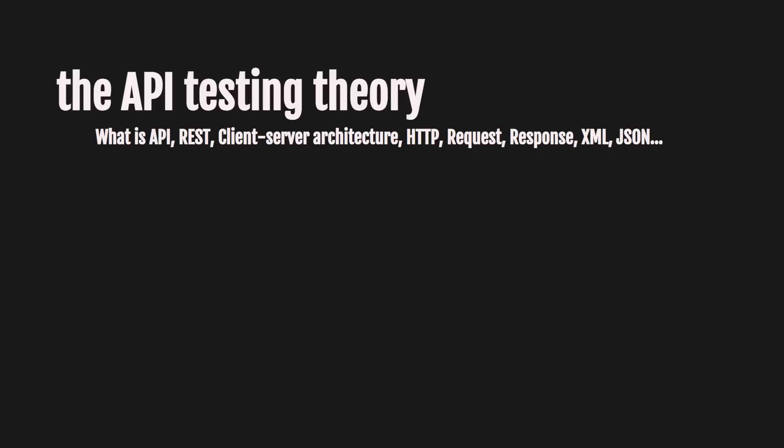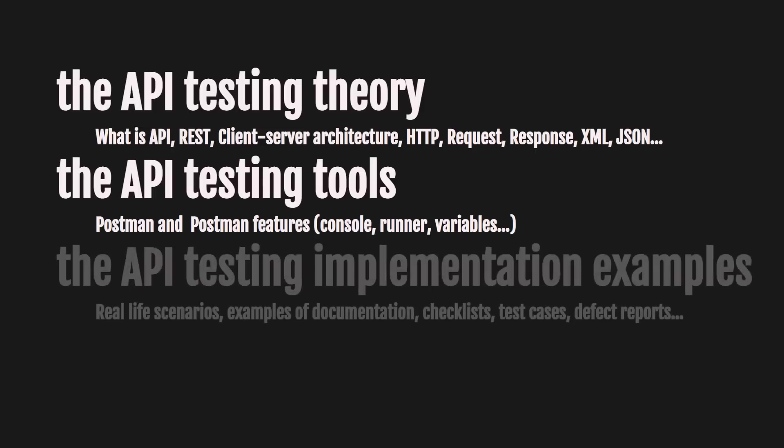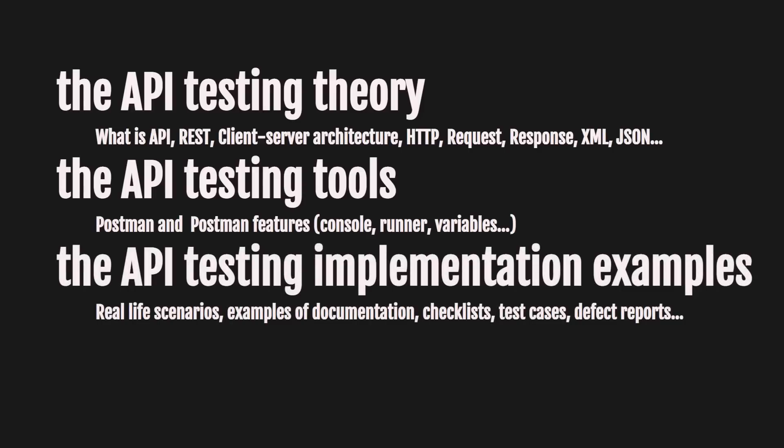The second thing you need is to be able to use at least one API testing tool. We are going to use Postman in our course and learn most of its interesting features like console, runner, and variables. The third thing you need is test practice. We are going to get familiar with real life scenarios, examples of documentation, checklists, test cases, and defect reports. We are going to learn how to test with requirements and without any requirements, because there is a huge difference between how API testing looks on paper and how it looks in reality.